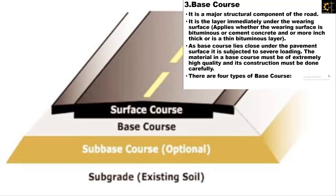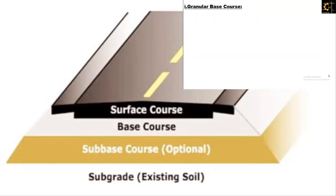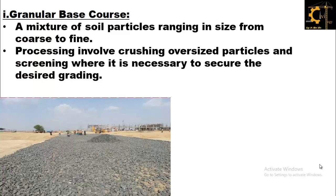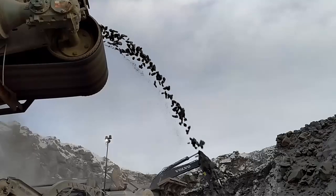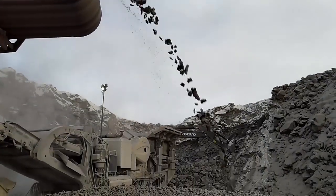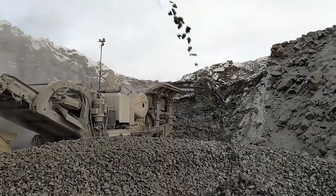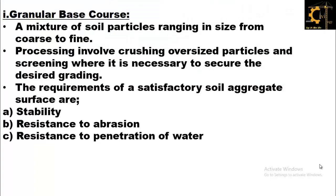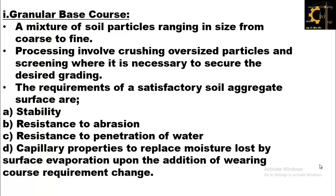There are four types of base course. The first one is granular base course, which is a mixture of soil particles ranging in size from coarse to fine. Processing involves crushing oversized particles and screening where necessary to secure the desired grading. The requirements of a satisfactory soil aggregate surface are that it should be stable, resist abrasion, and resist penetration of water. A fourth point is capillary properties to replace moisture lost by surface evaporation.